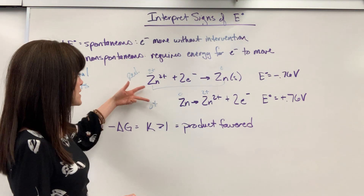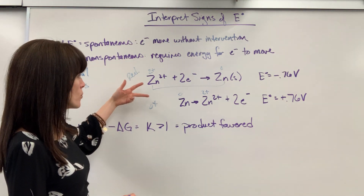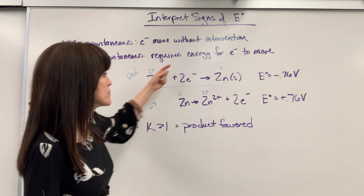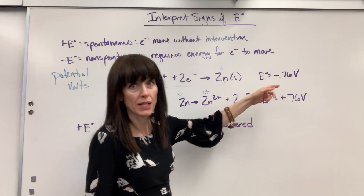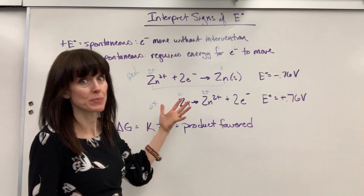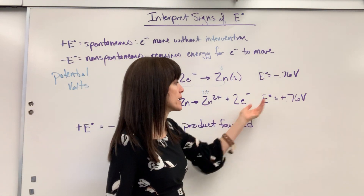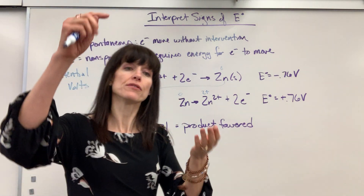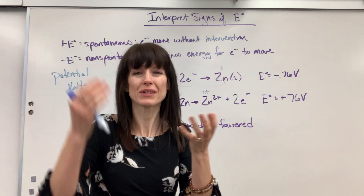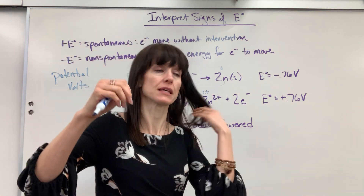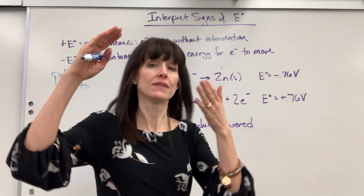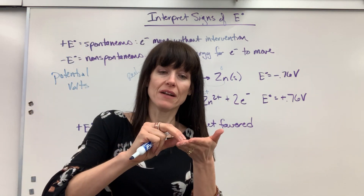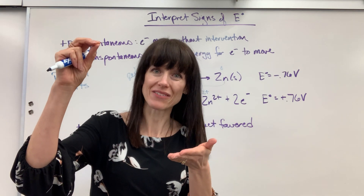One last thing — remember that we have conservation of energy. The energy required in the reduction is going to be the same energy, the same potential, but with the opposite sign, as the energy released. So these numbers, they just change signs. If naturally the potential is 0.76 to lose electrons, then to force the electrons back up is going to be 0.76.